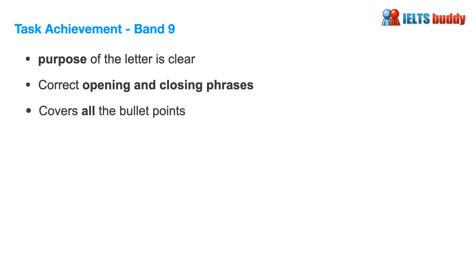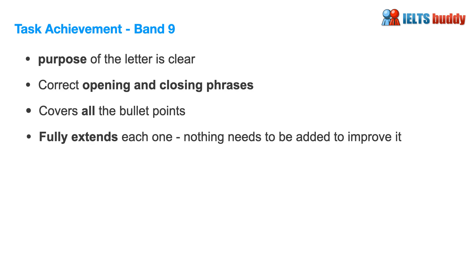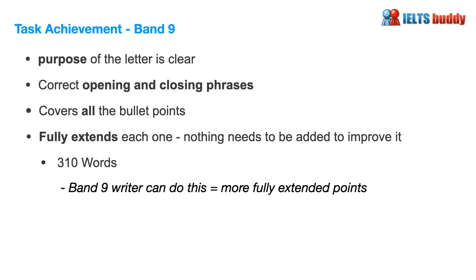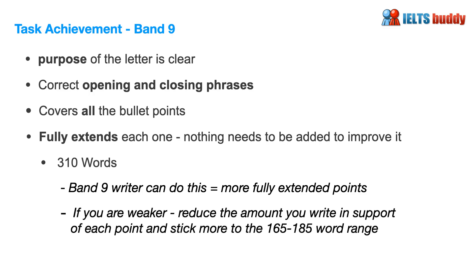Now let's look at why this letter would particularly get a band 9. For task achievement, the purpose is very clear, correct opening and closing phrases were used, it covers all the bullet points and fully extends each one — nothing needs to be added. This letter was 310 words, which might seem long since the minimum is 150. However, a band 9 writer will usually produce more fully extended points. If you are a weaker writer, reduce the support for each point and stick more to the 165 to 185 word range. You have to be realistic about what you can achieve in the time.